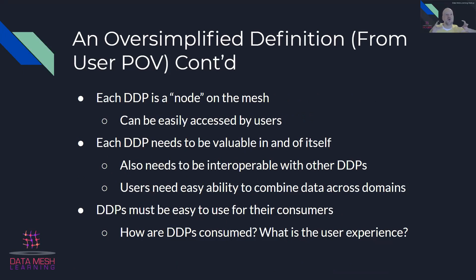Each DDP is a node on the mesh. The point of data mesh is that you can go and get at this data, find it, use it. Each DDP needs to be valuable in and of itself. A lot of people think about a single table being a domain data product, but I think that's far too small — you want to group it into a large enough context-sharing mechanism to be valuable. We also need to make it interoperable; otherwise, you've got highly accessible data silos that you can't combine across domains.